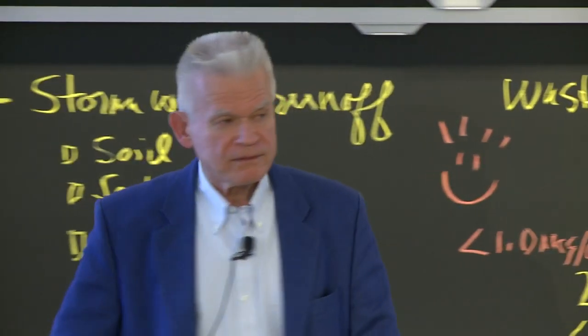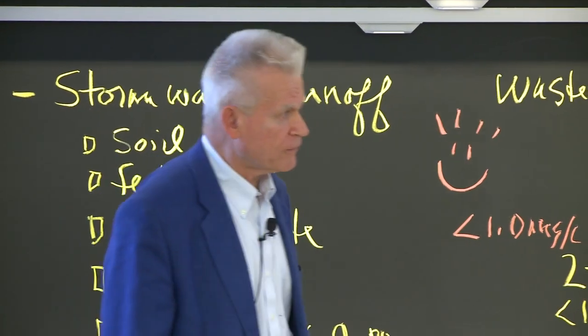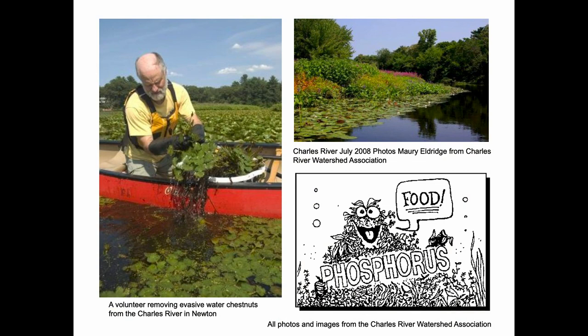Now let's look at the ecological effect of all this phosphorus. This is the Charles River up by Newton, Mass. There's a guy in a canoe trying to pull out the vegetation out of the water. This vegetation does two things: it blocks sunlight to organisms and other plants below the surface that need that sun, and it's going to die and produce swamp-like odors. Then it gets decomposed by microorganisms that use up the oxygen.